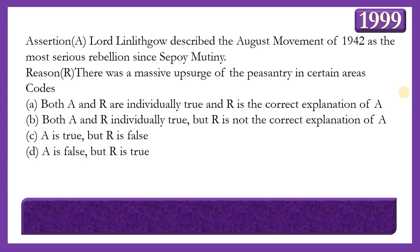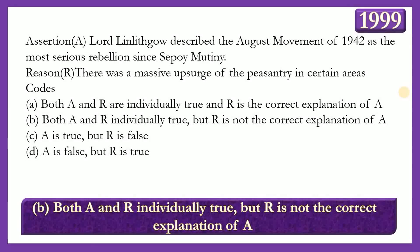Next assertion-reason question (a repeated type): Assertion: Lord Linlithgow described the August Movement of 1942 as the most serious revolt since the Sepoy Mutiny. Reason: There was a massive upsurge of people in certain areas. The answer is option B — both A and R are individually true but R is not the correct explanation of A — because the Quit India Movement started on 8th August 1942 with unprecedented involvement of peasants, which made the struggle more fierce.